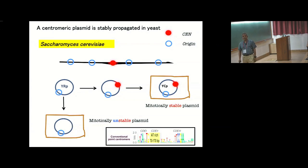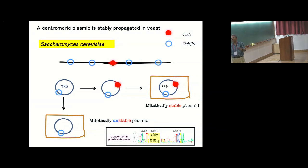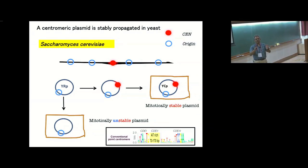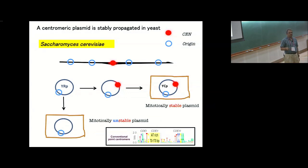S. pombe has three chromosomes, and the smallest chromosome of S. pombe is actually smaller than the longest chromosome of S. cerevisiae, which means S. cerevisiae has a longer chromosome that can segregate with just 125 base pairs. So it's not just the length of chromosome that matters—we don't know why a particular centromere length is fixed in each organism.